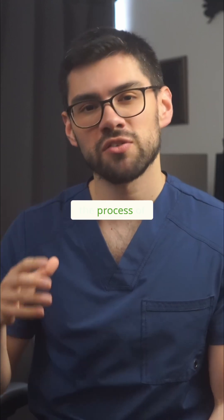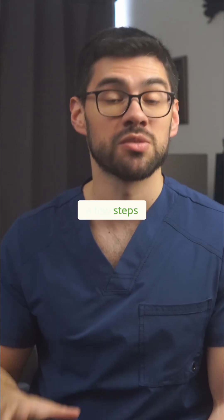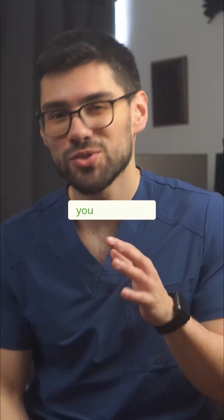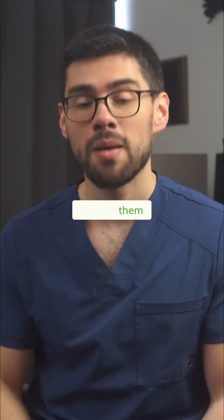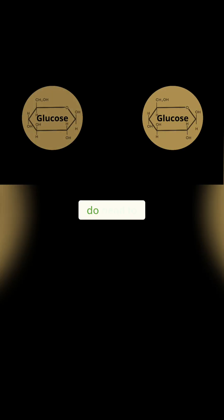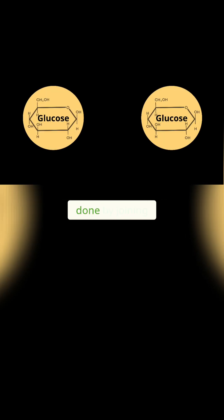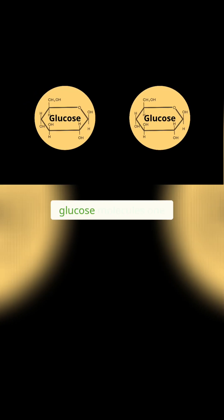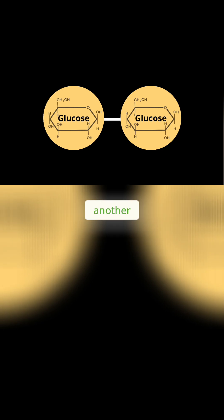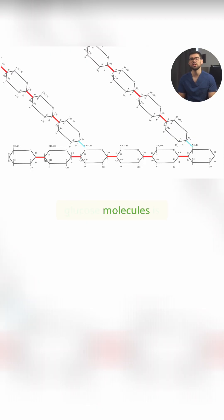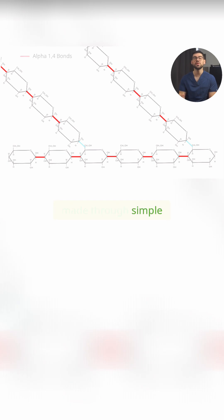The process of building glycogen has a few steps. Fortunately, for this topic, you don't really need to memorize most of them. What you do need to understand is that building glycogen is basically done by joining glucose molecules one beside another. As you can see in this image, most of the time the joining between glucose molecules is made through simple alpha-1,4 bonds.